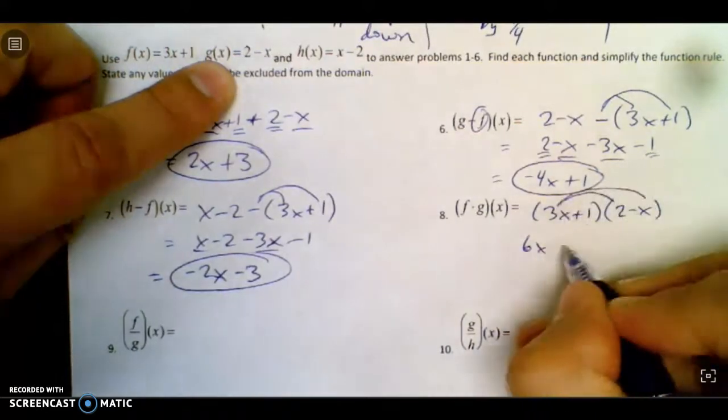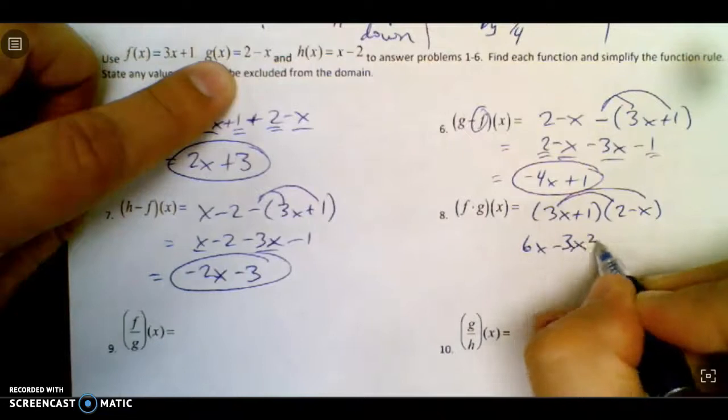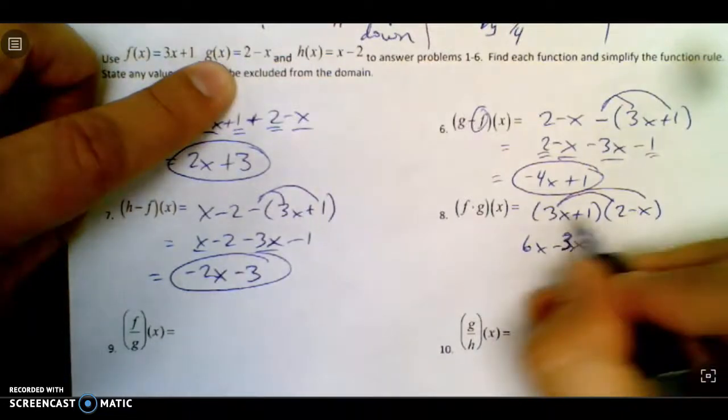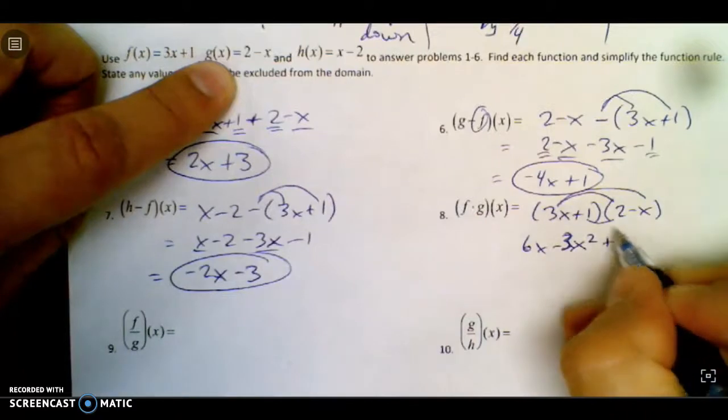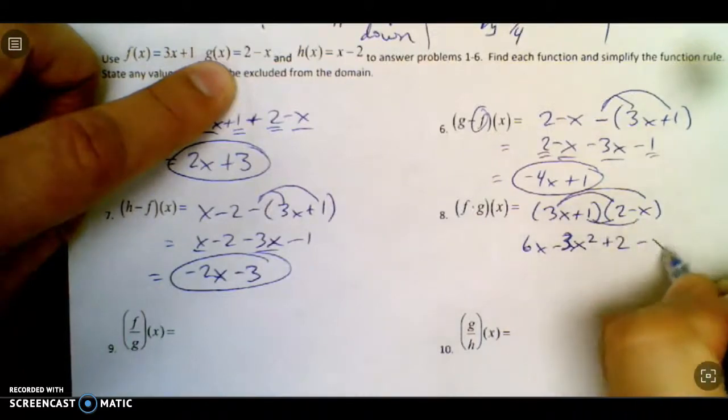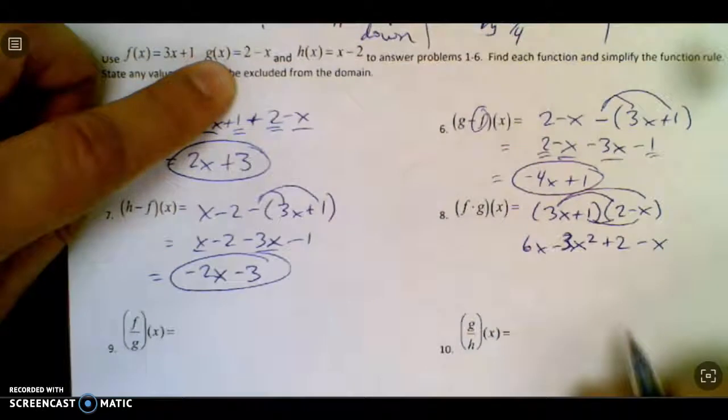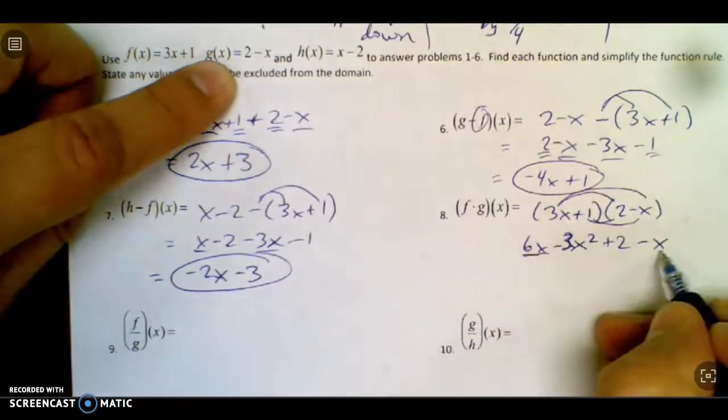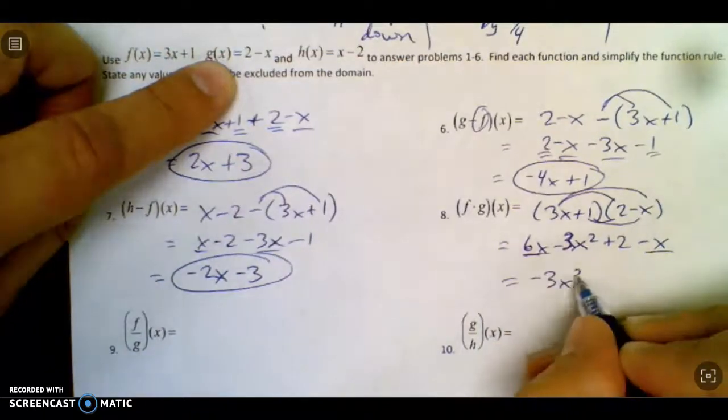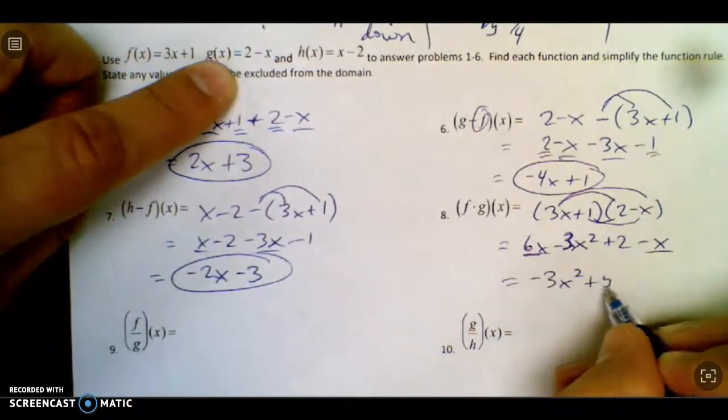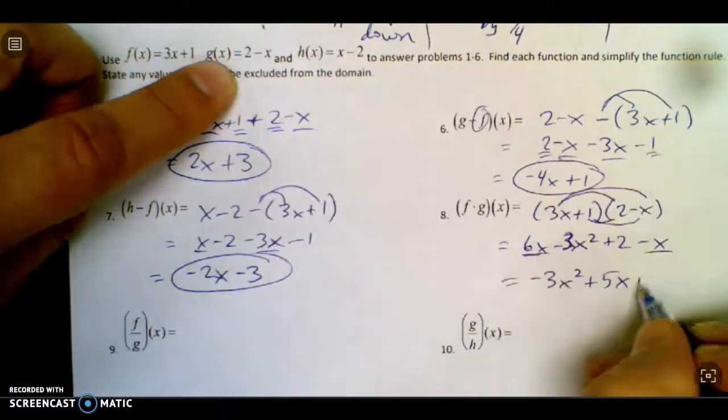Your outer is minus 3x squared. That negative sign goes with it. And then inner is plus 2. And last times last is minus x. And then we want to combine like terms. The x squared doesn't have anything to combine with. So we do that. And we have 5x's left and 2.